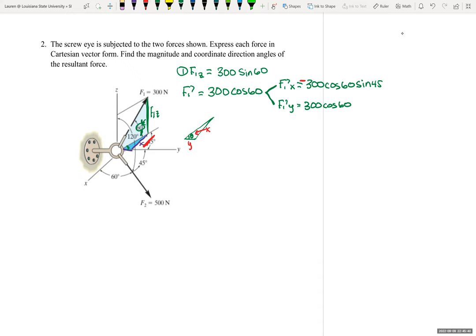So remember to keep that in mind, but the Y is positive because it's in the positive Y direction, and it will be cosine 45 because it is next to that theta.